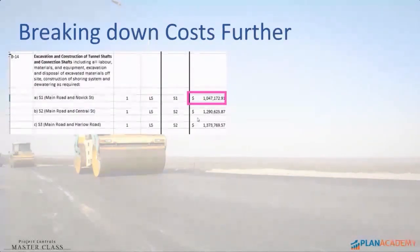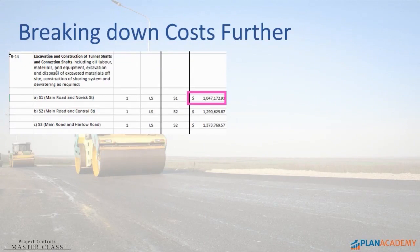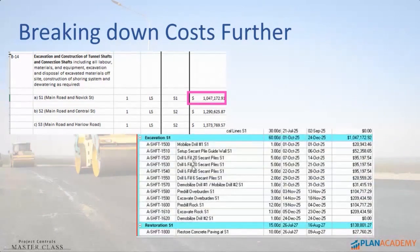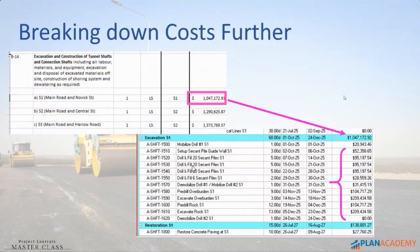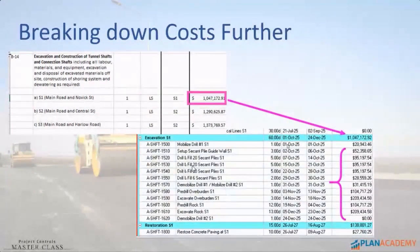I have to break these costs down further. Look at this situation — this is a big piece of work. You're excavating the tunnel shafts; excavation and construction of tunnel shafts at S1 is a million bucks worth of work. So how do I take my million dollars and assign it to my work? I broke it down into chunks and assigned it to each activity. There's my million dollars totaling up for all of these — looks like a dozen activities or so.